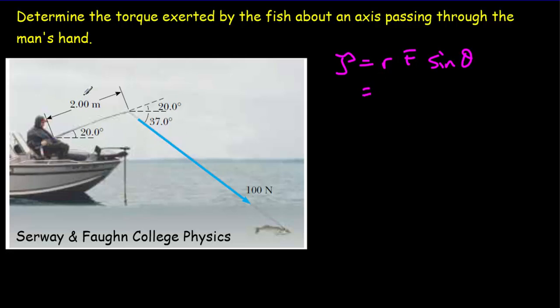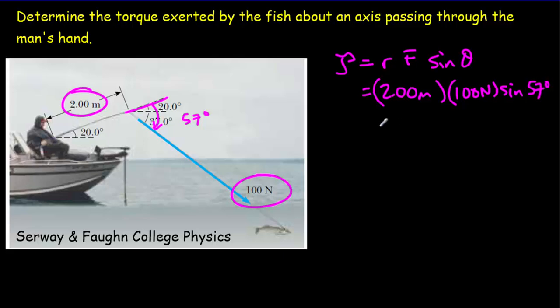So our lever arm distance here, that's the 2.00 meters. The force is 100 newtons. And the angle between the lever arm and the force is 57 degrees. Multiply that out and you should get a torque of 168 newton meters.